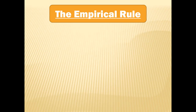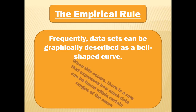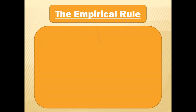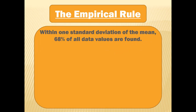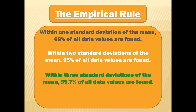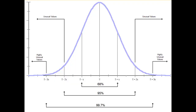Let's talk about the empirical rule. The empirical rule is a way to use standard deviation to estimate how many data values should be within a certain distance of the mean. Frequently, data sets can be graphically described as a bell curve. When this occurs, the empirical rule expresses how much data can be found within certain ranges of the mean. Within one standard deviation of the mean, 68% of all data values are found. Within two standard deviations, you'll find 95% of all data values.